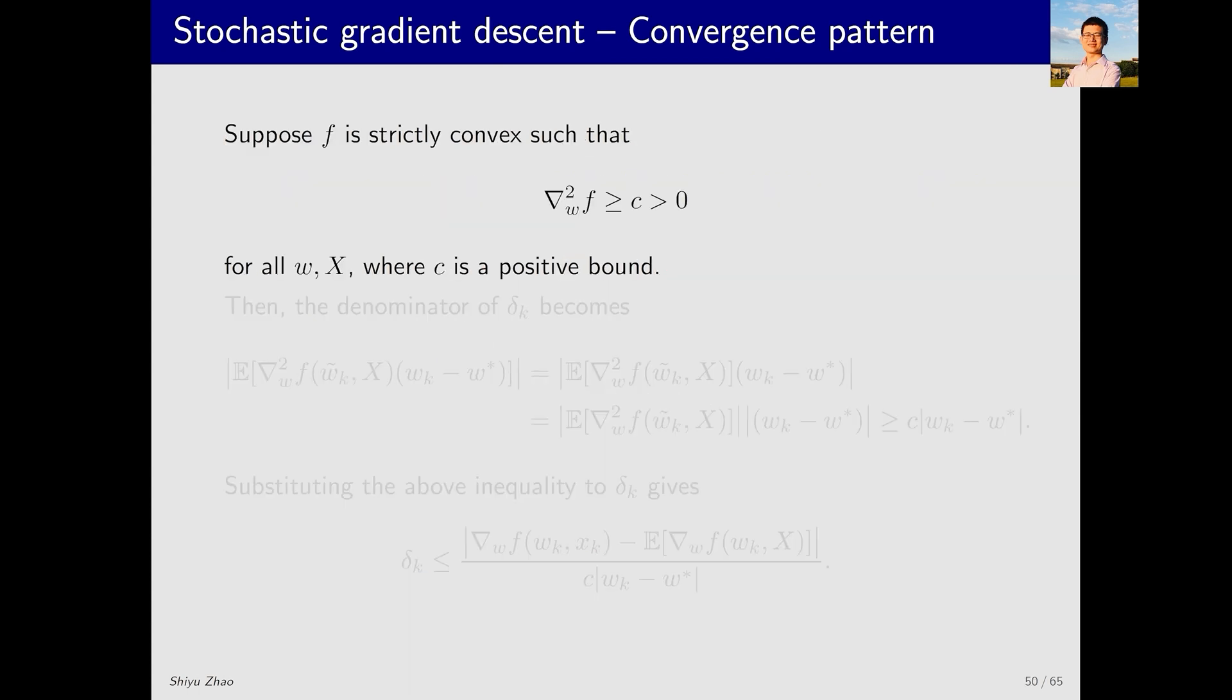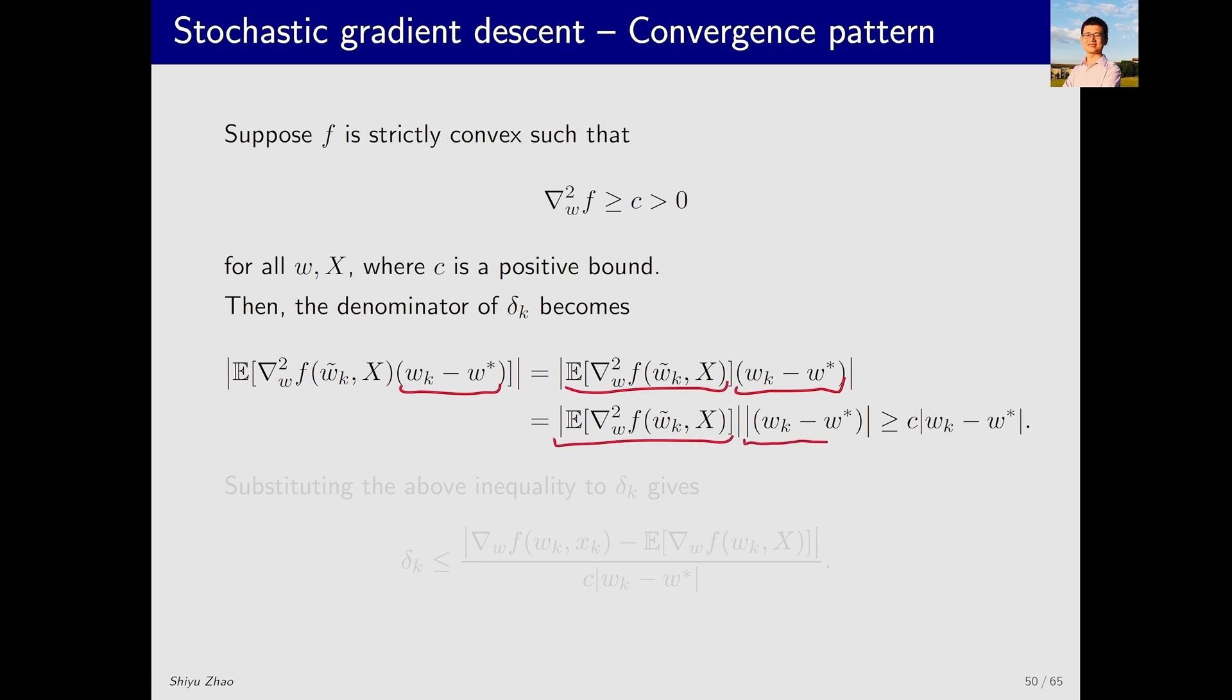We assume that the second order gradient of f is a positive number greater than zero. With this condition we substitute into the denominator. Since w_k - w* is not a random variable, we can extract it from the expectation, transforming it into these two terms. The absolute value of the product of these two terms can then be written as the product of their absolute values.